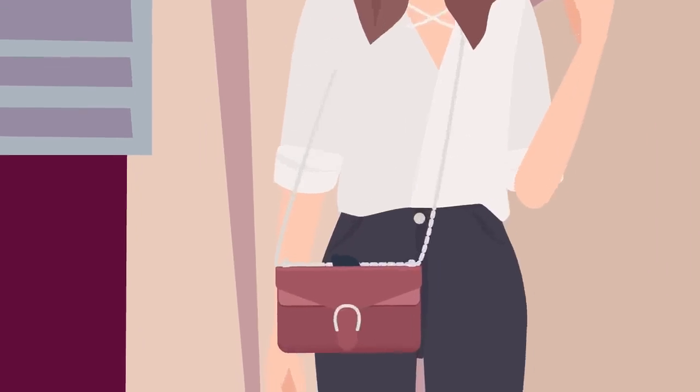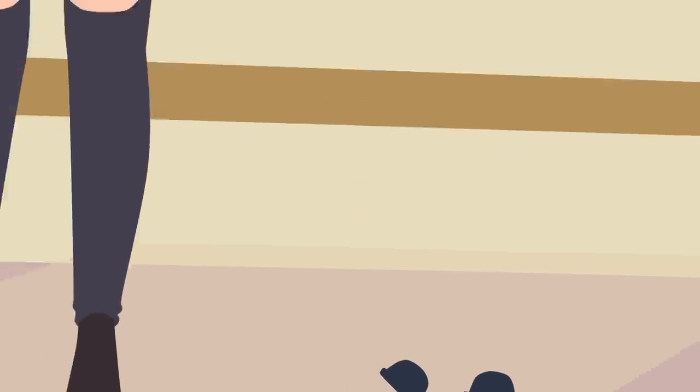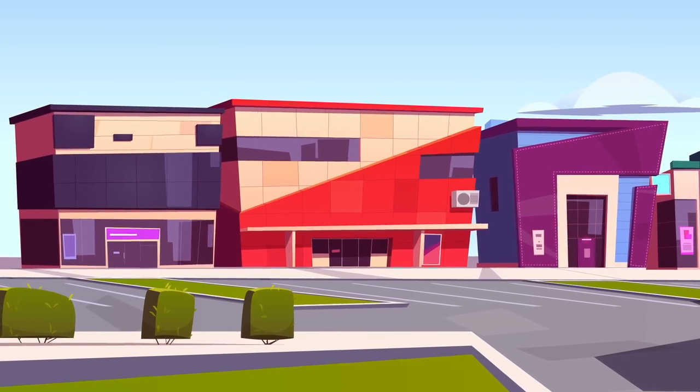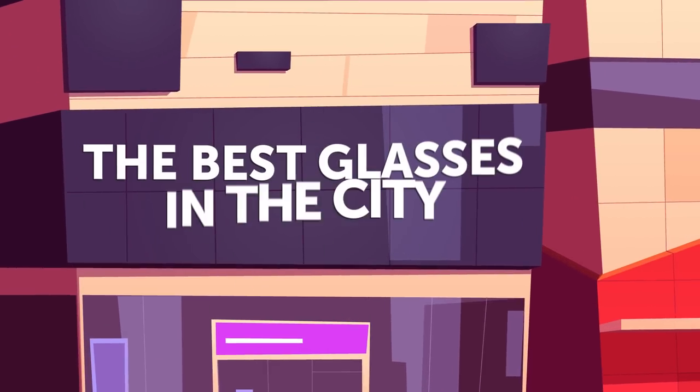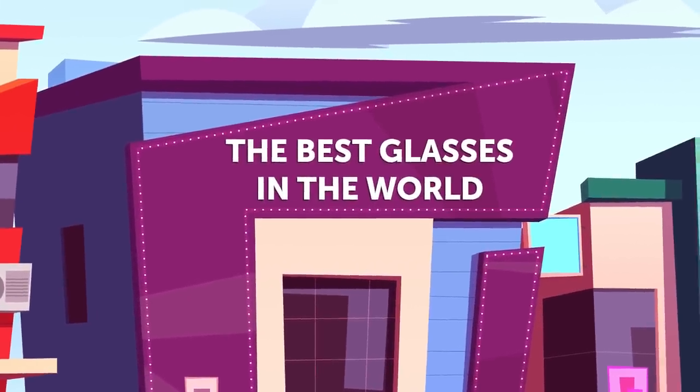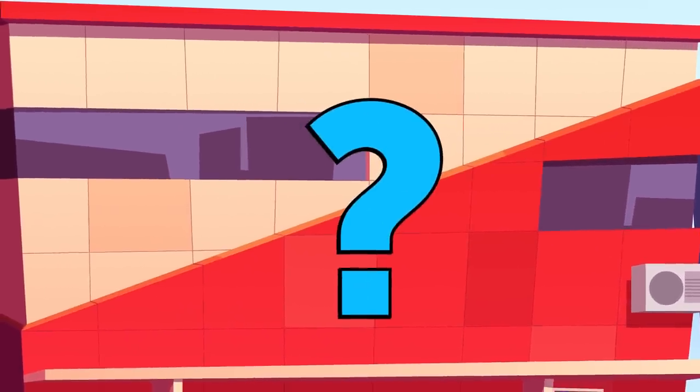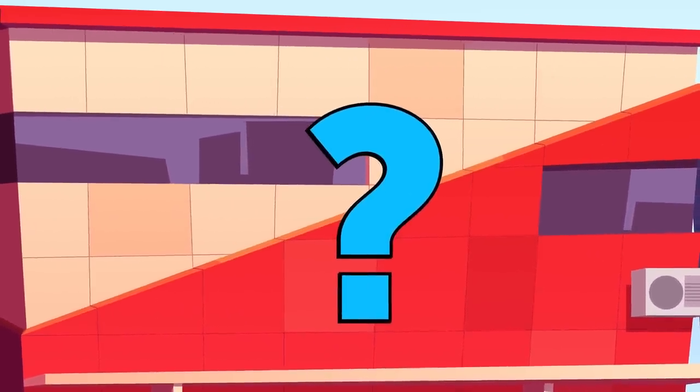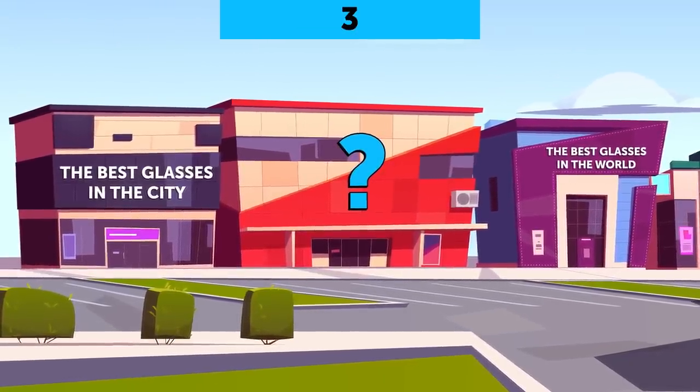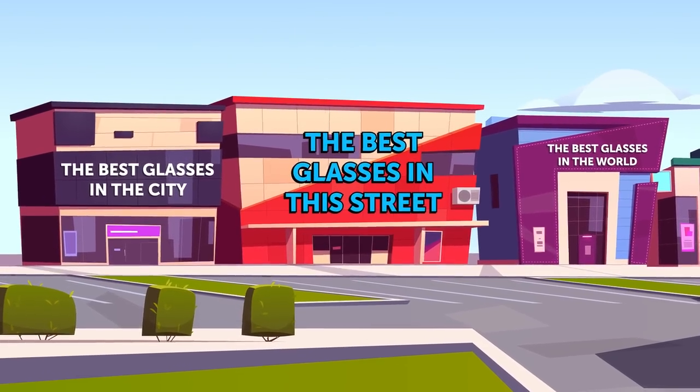While leaving her house, Sandy takes her sunglasses out of her bag and accidentally breaks them. Now she needs to buy new ones. Sandy calls a taxi and arrives at a street with fashionable boutiques. The first building claims the best glasses in the city, the second says the best glasses in the world, and the third store has the coolest inscription. Sandy heads there. What is written on the third store? The best glasses in this street.